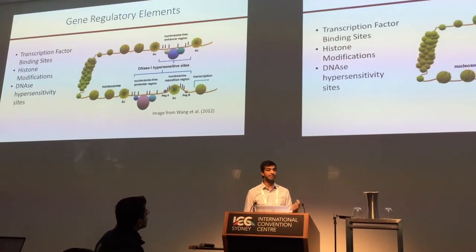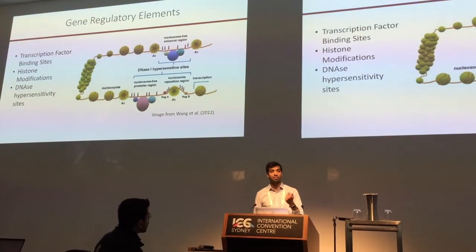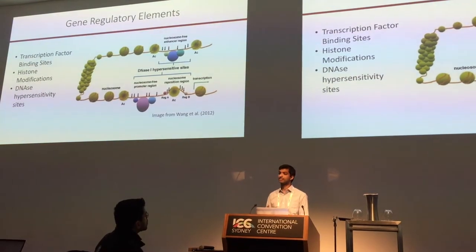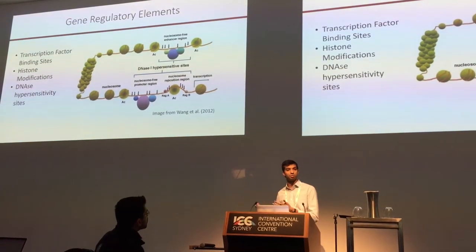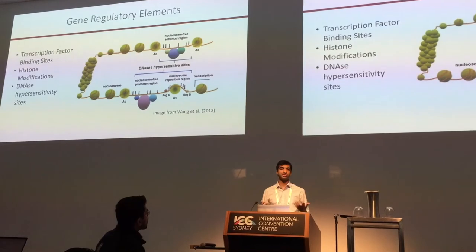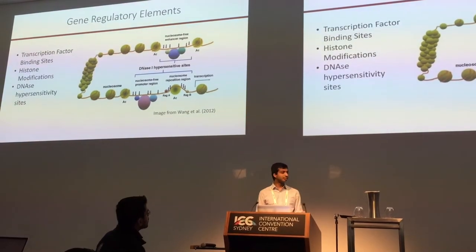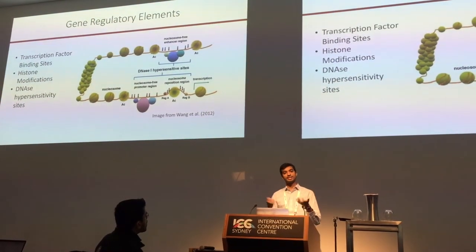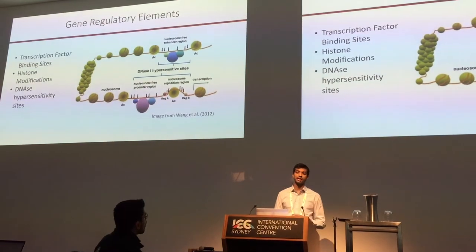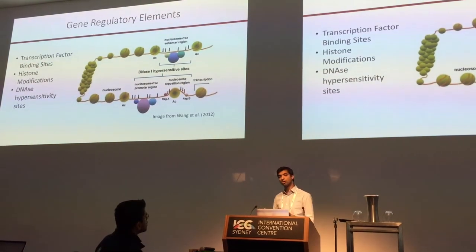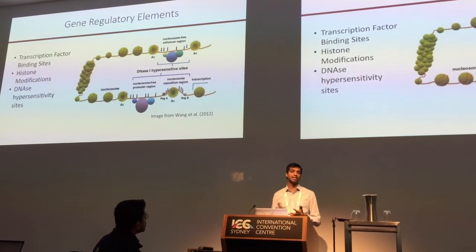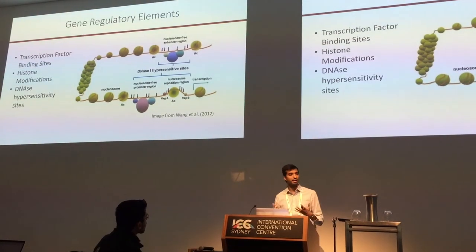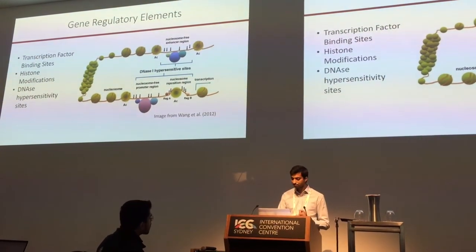There are also histones that the DNA loops around, and chemical modifications to these histones can affect the accessibility of DNA, which then affects more binding behavior. There are also DNase hypersensitivity sites, which we heard about earlier, which are intrinsically accessible regions of the genome. Knowing where these are in different cell types is useful to understanding the binding profiles of those cell types.